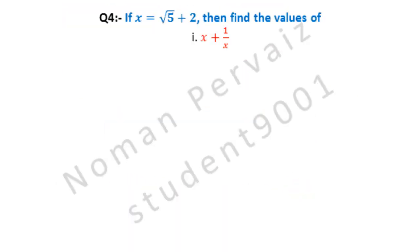Question number 4 is: if x is equal to under root 5 plus 2, then find the values of — and part 1 is x plus 1 over x.